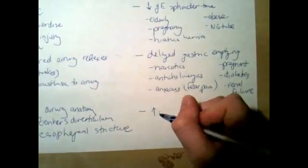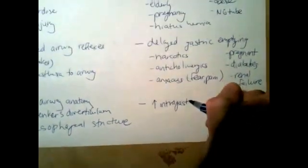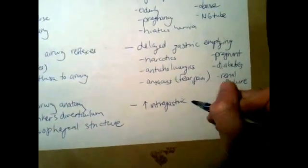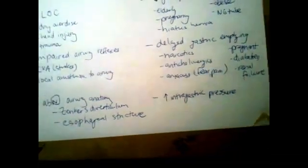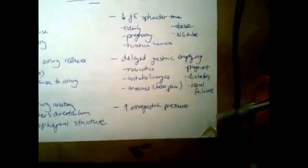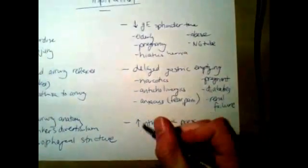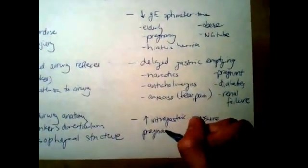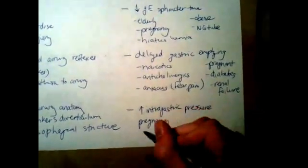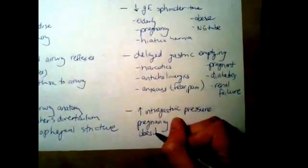The last category is any reason for increased intragastric pressure. As you can imagine, this is anything that increases pressure on the abdomen. So we're talking about pregnancy again — as you can see, pregnancy is a major risk factor — and obesity again, which is definitely a big risk factor for aspiration.